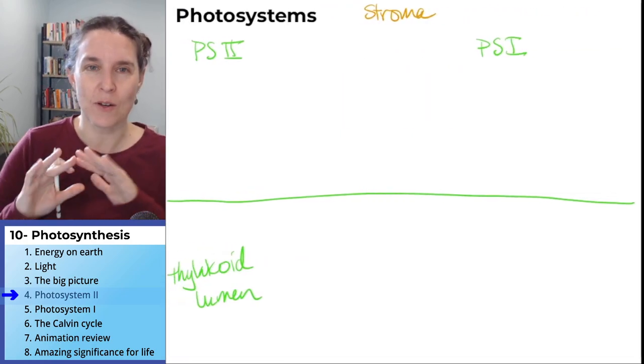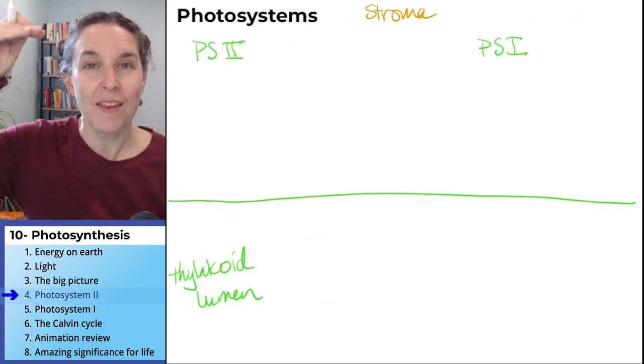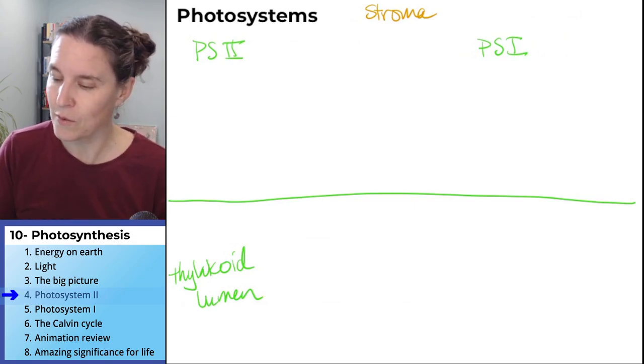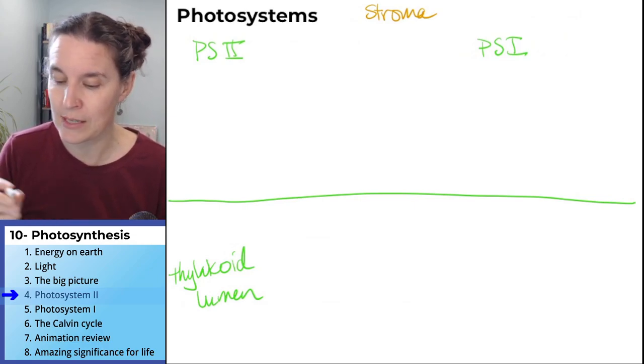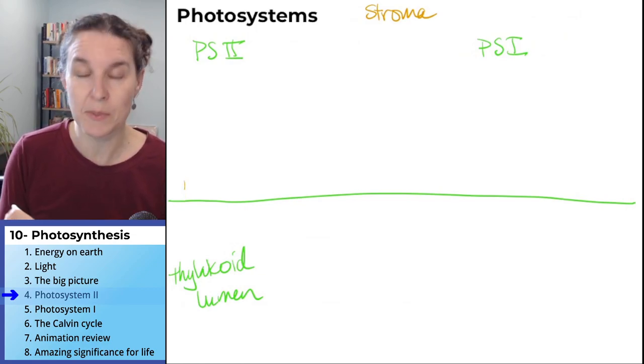Settle down. I'm feeling a little goofy. Can you tell? Stroma on top, thylakoid lumen on the bottom. The first thing I'm going to draw for you is my photosystem. Photosystems must be green.